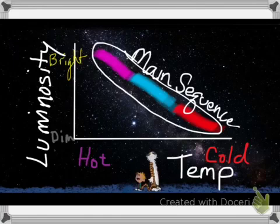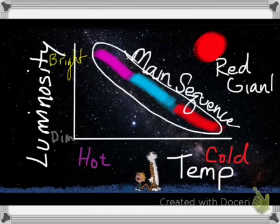There are some cold stars that are so freakishly big that they produce a lot of light. They're called red giants.